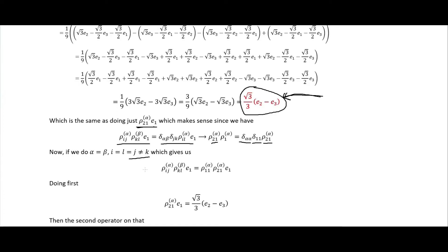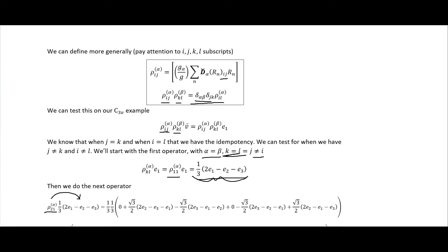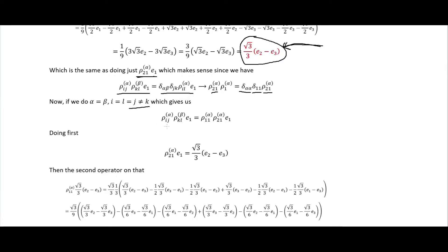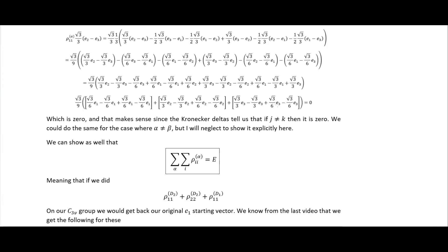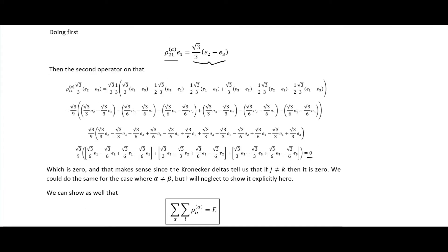If j is not equal to k — meaning this j is not equal to this k, which is part of our Kronecker deltas — then we should get zero. We apply rho_21 on e1 to get an intermediate result, then apply rho_21 on that. After going through all the math, we do in fact get zero, which is exactly what the Kronecker deltas told us we should get.